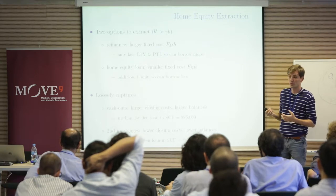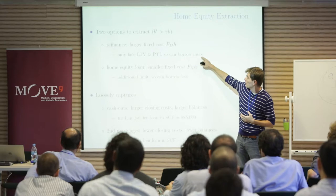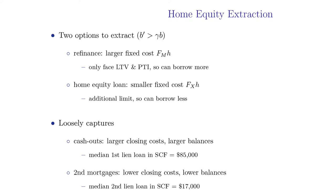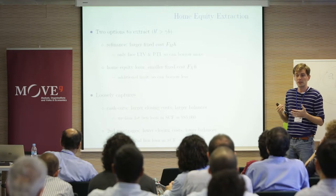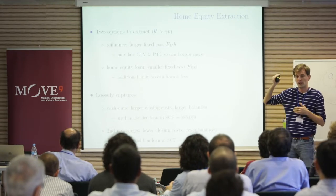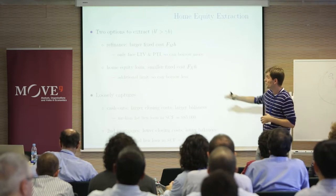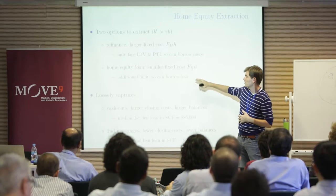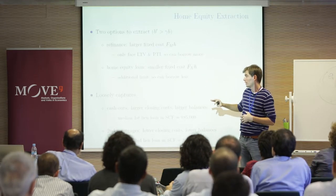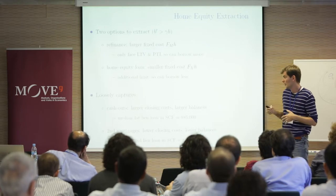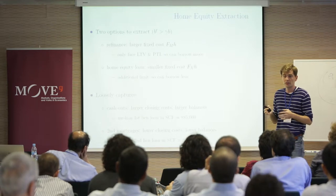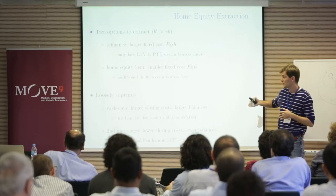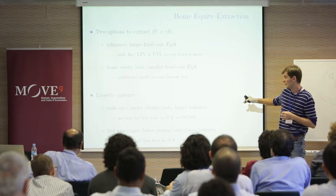We give households two options to extract home equity. The first is cash-out refinancing, which entails a fixed cost FM × H and faces LTV and PTI constraints — the LTV limits borrowing, and the PTI limits the mortgage payment relative to income. The second is a home equity loan (HELOC) with a smaller fixed cost FX × H but an additional limit on borrowing. We need both options in order to match the empirical moment that people borrow infrequently but extract around $23,000 when they do.